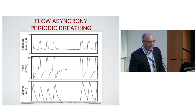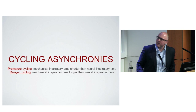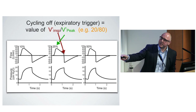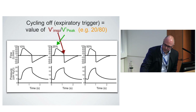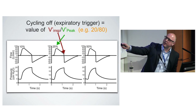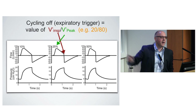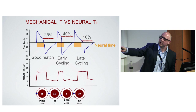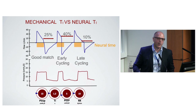Now cycling asynchrony — premature and delayed. In pressure support, the ventilator has both an inspiratory trigger and an expiratory one. In pressure support, the expiratory trigger is flow-based. The cycling criterion is the ratio of current flow to peak flow. For example, if the peak is 80 and the current flow is 20, that is a 25% cycling-off criterion. You can make inspiratory time shorter by moving the criterion closer to peak expiratory flow, or longer by moving the criterion further from peak expiratory flow.